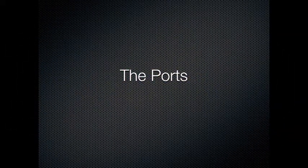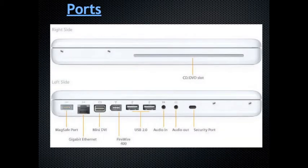The ports: the first port on the MacBook is the MagSafe port, used for charging — it is a magnetic port. Next is the Gigabit Ethernet port, for wired internet. The Mini-DVI port is for connecting the laptop to projectors in teachers' classrooms. The FireWire 400 port is for connecting external hard drives. There are two USB 2.0 ports for flash drives and other USB items. The audio-in is used to connect an external microphone. The audio-out is for headphones — all students are required to purchase and carry their own headphones. The security port is for locking the laptop to a table or other secure item.